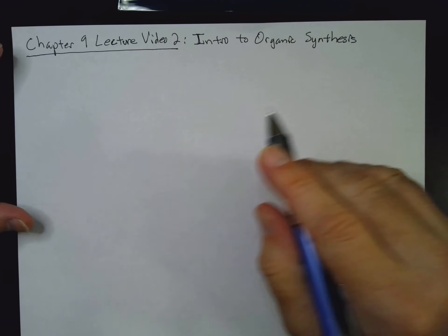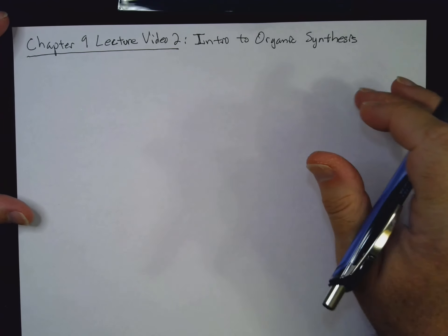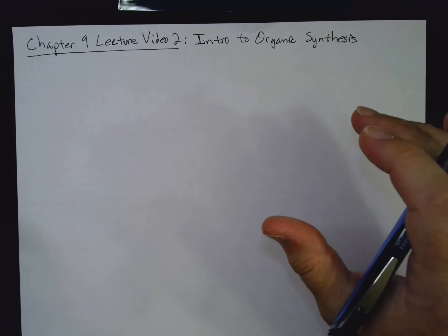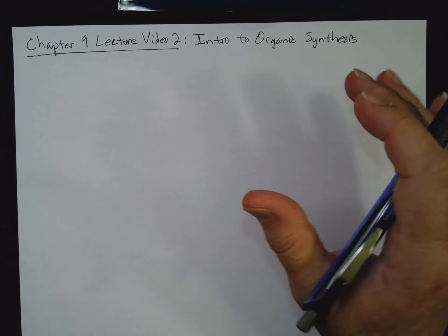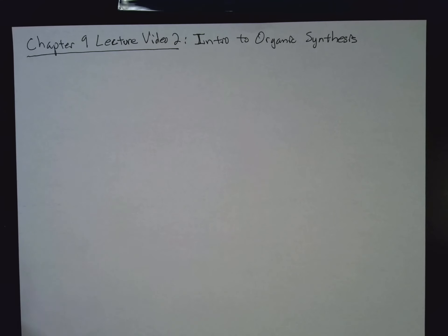All right, welcome back. Dr. P here. And in this lecture video, I'm mostly going to talk about organic synthesis. And this is something that is covered in chapter 9, or at least there's an introduction in chapter 9. And it starts in section 9.9. I will mention one of the reactions, namely the use of acetylide ions to alkylate things. Let's get started talking about synthesis.